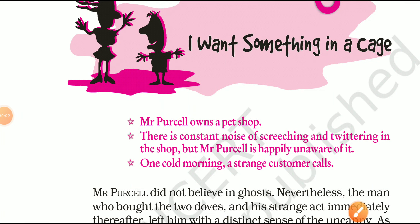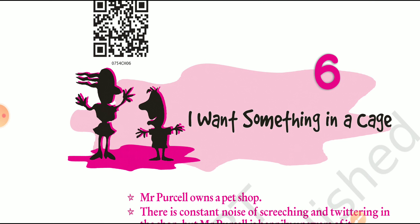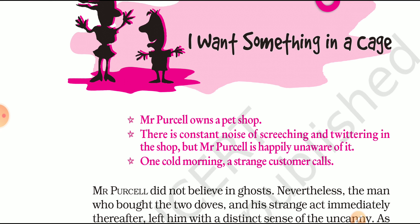Good morning children, welcome to your English video lecture. In our previous video we started chapter number six from your book 'An Alien Hand' — the chapter by the name 'I Want Something in a Cage.' I have already explained the whole chapter, so today we will be doing some question answers from the chapter, discussing the worksheet questions.